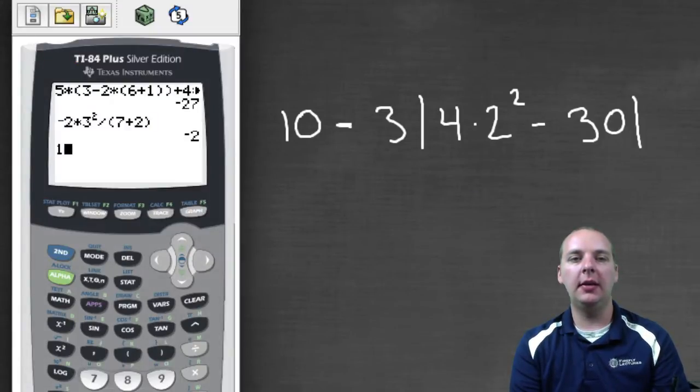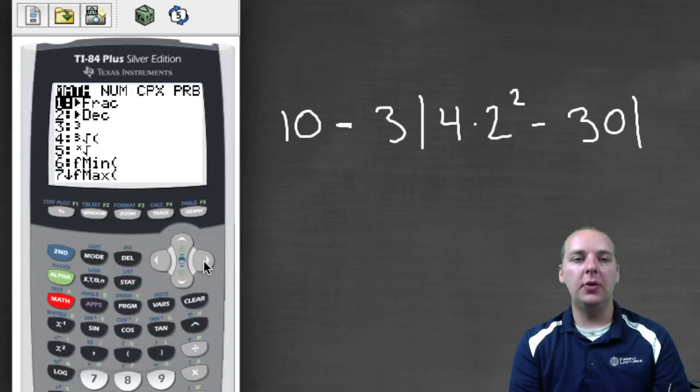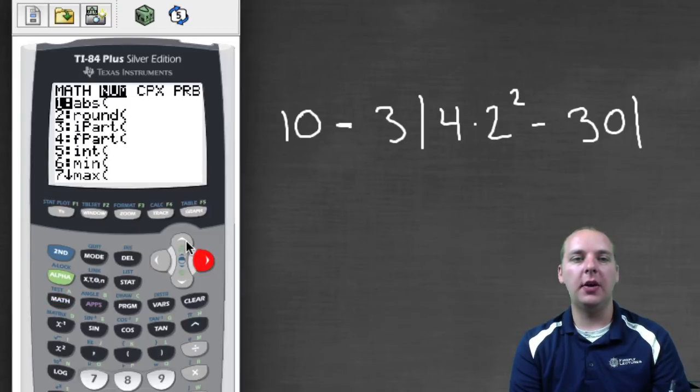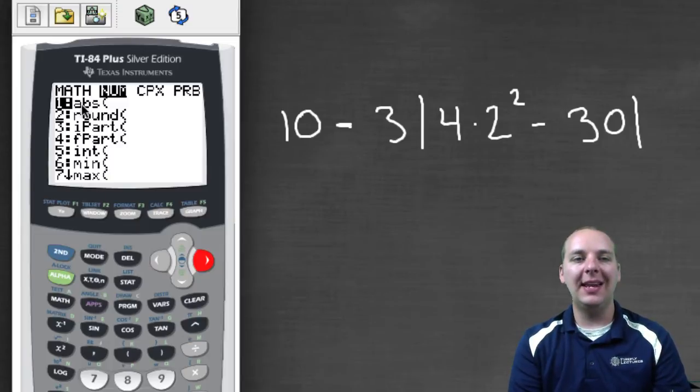We would have 10 - 3 times, alright then we have to find the absolute value button. If you look around, there's not an absolute value button, or so it seems. So if you push math, then you actually do have an absolute value button. If you look under the numbers column in NUM, and that's right beside the math column, and this is after you push the math button by the way.